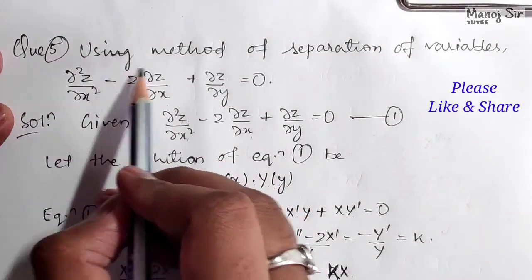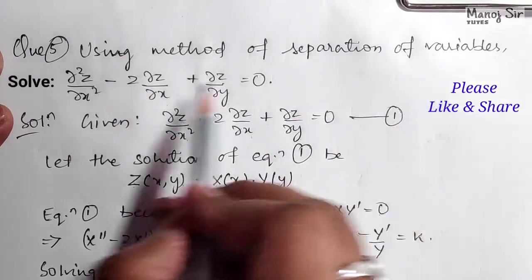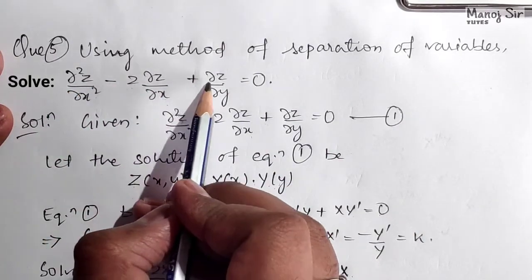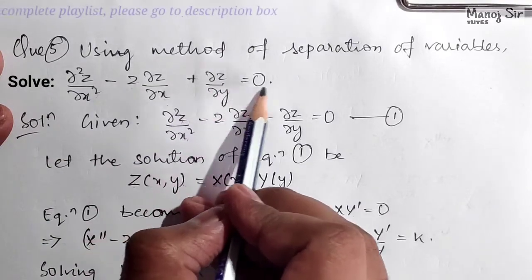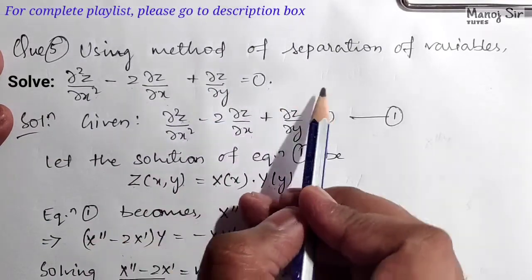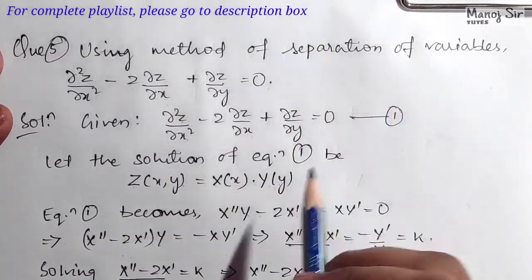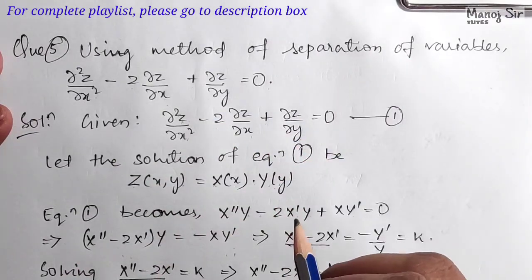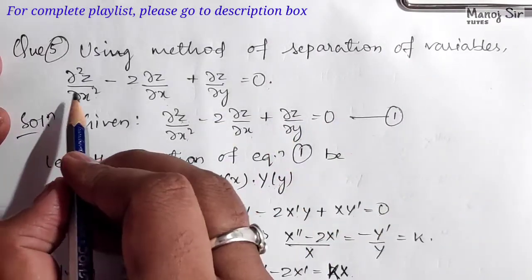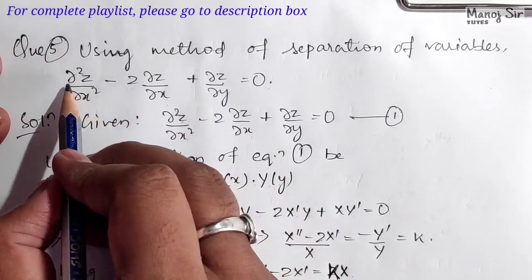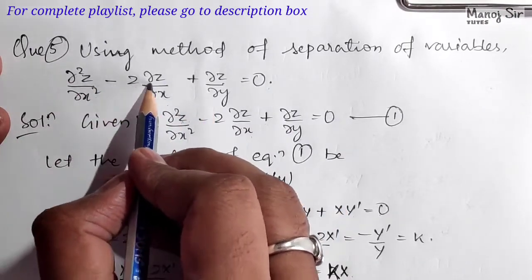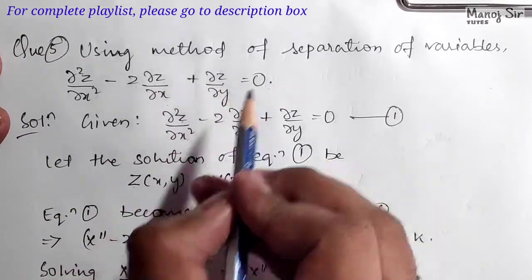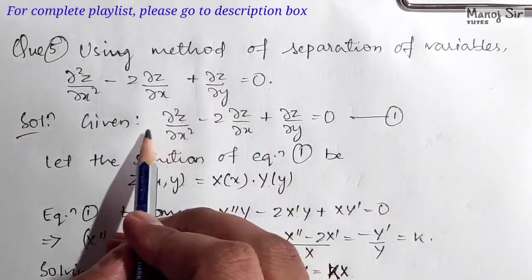The problem is: using the method of separation of variables, solve del squared z upon del x squared minus 2 del z upon del x plus del z upon del y equals zero. Here the boundary condition is not given, so we need not find the constants. The given partial differential equation is del squared z upon del x squared minus 2 del z upon del x plus del z upon del y equals zero. Let's call this equation (1).